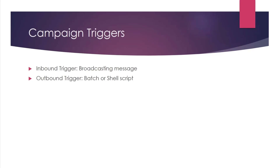Outbound triggers are batch or shell scripts that are executed when called by Campaign. Inbound triggers are defined in the schedule process box to initiate a flowchart run, whereas outbound triggers can be defined in call list, mail list, or the advanced option of the flowchart.